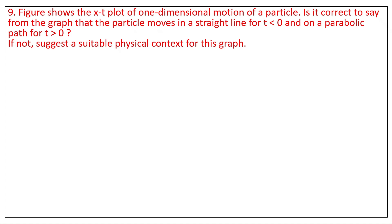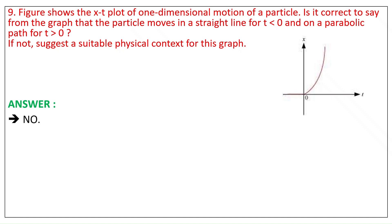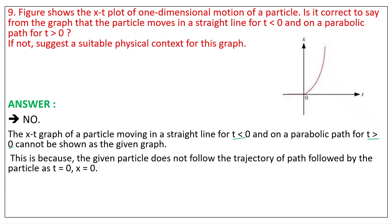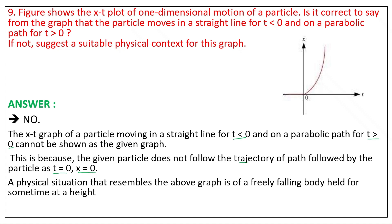Question 9. A figure shows the X-T plot of one-dimensional motion of a particle. Is it correct to say from the graph that the particle moves in a straight line for t less than 0, and on a parabolic path for t greater than 0? If not, suggest a suitable physical context. Answer: No. The X-T graph cannot represent such motion, because at t equals 0, x equals 0. A physical situation that resembles this graph is of a freely falling body held for some time at a height.